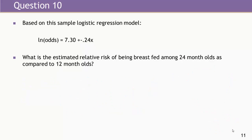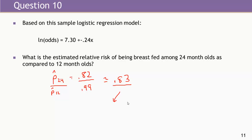Let's look at that on the relative risk scale. The estimated proportion breastfed among 24-month-olds was 82%, and among 12-month-olds was 99%. On the relative risk scale, this still indicates a reduction, but it looks rather tepid compared to the odds ratio — only a 17% reduction in risk. This is an example where the odds ratio and relative risk agree in direction but can differ greatly in magnitude, and calling the odds ratio the relative risk would substantially overstate the reduction.